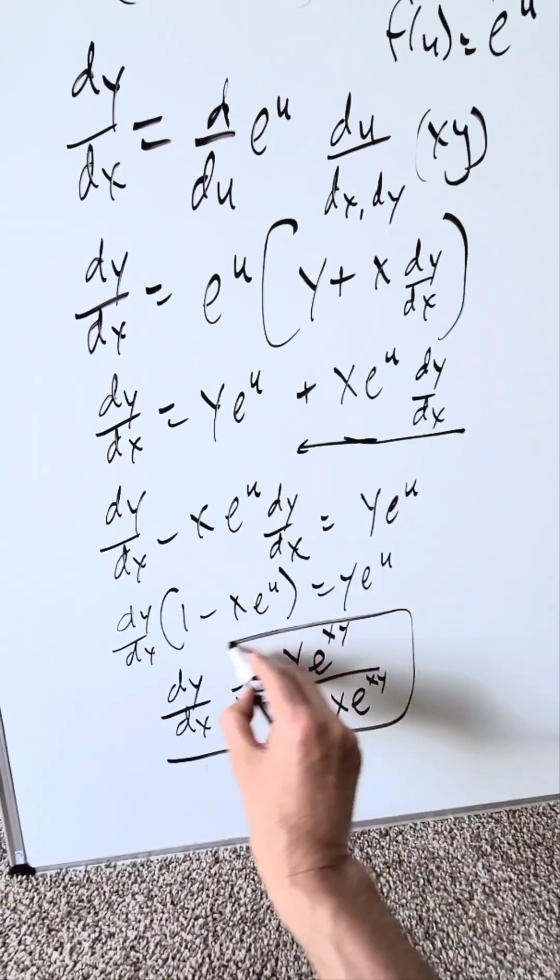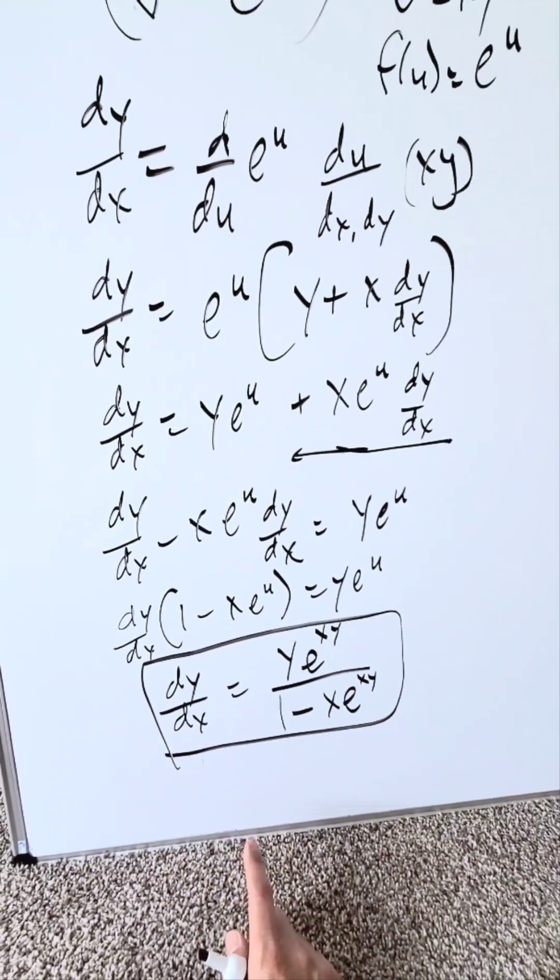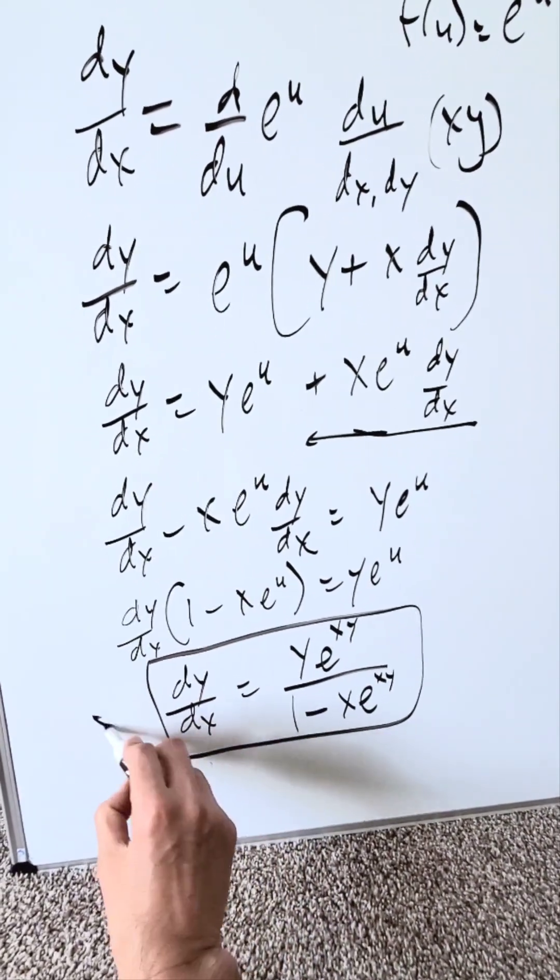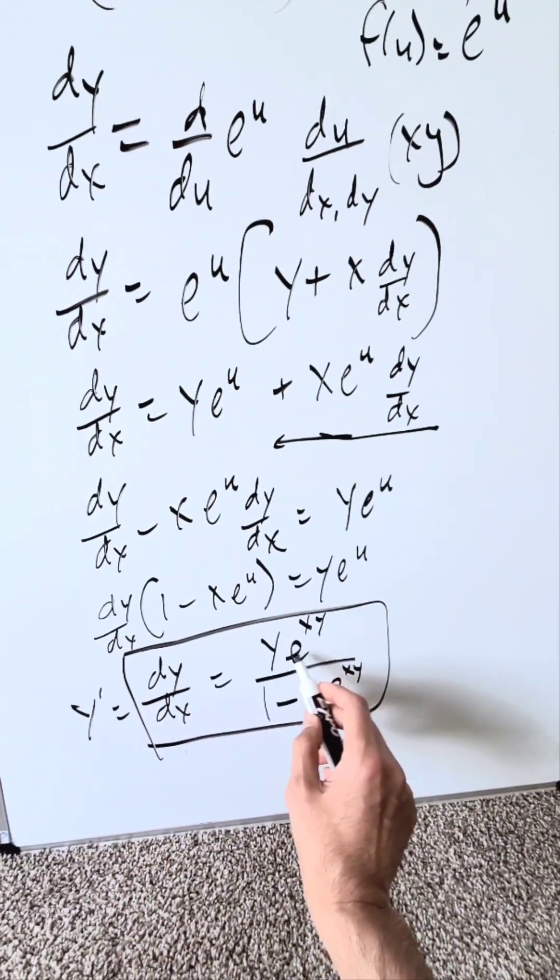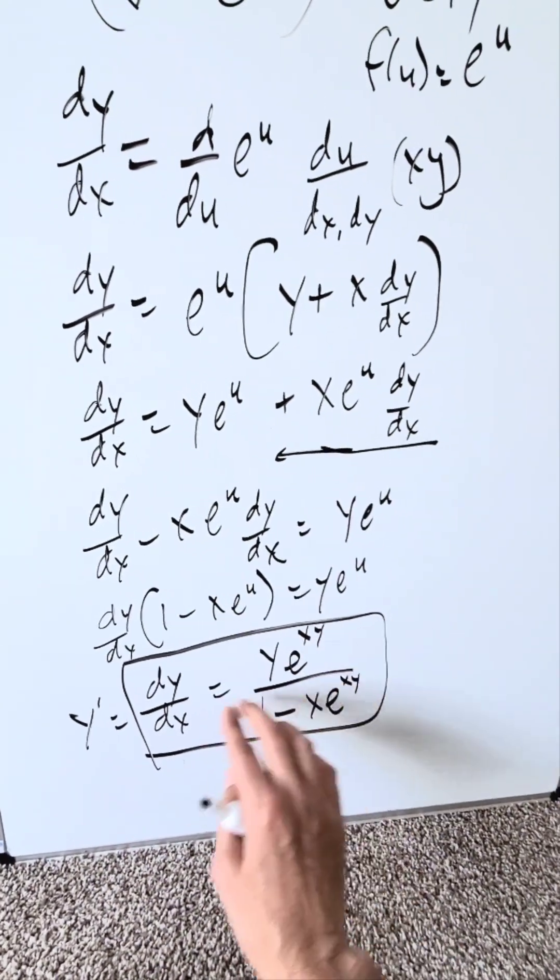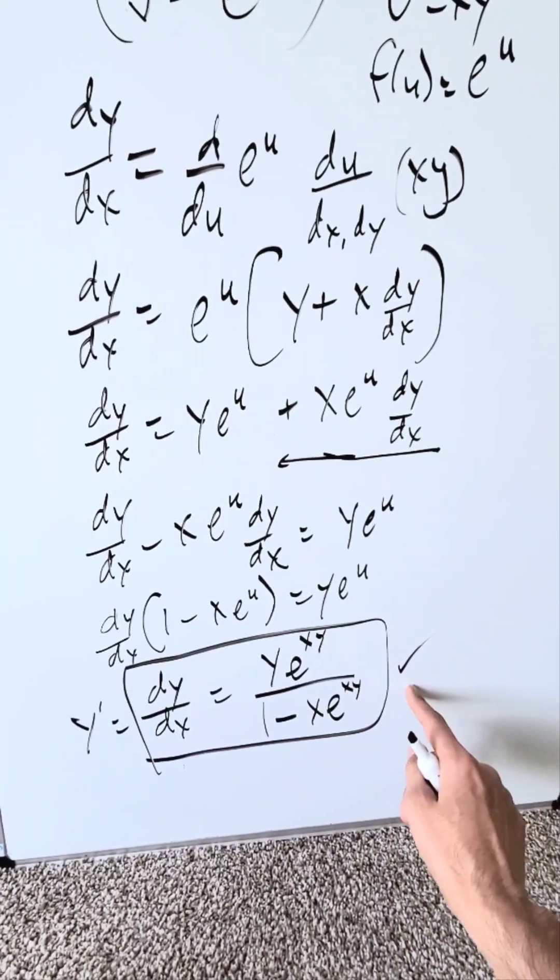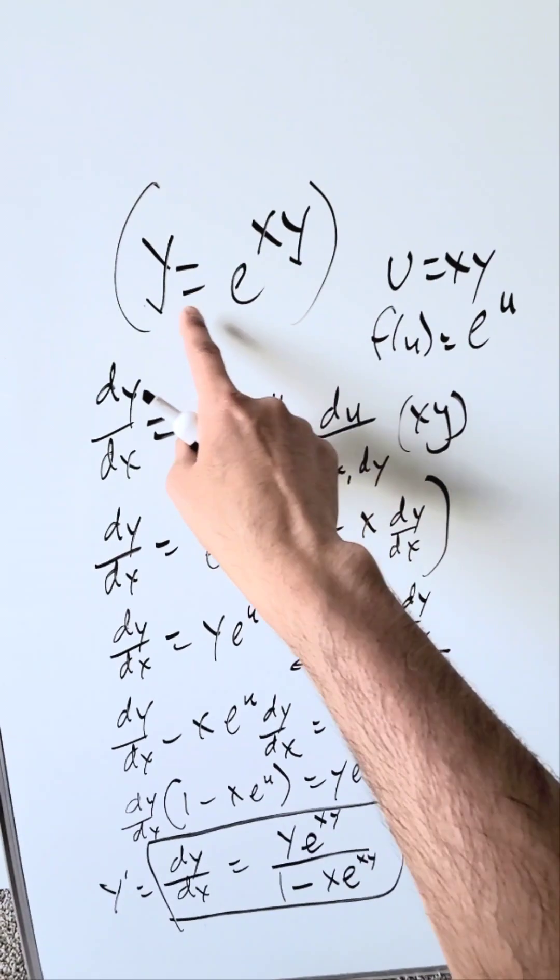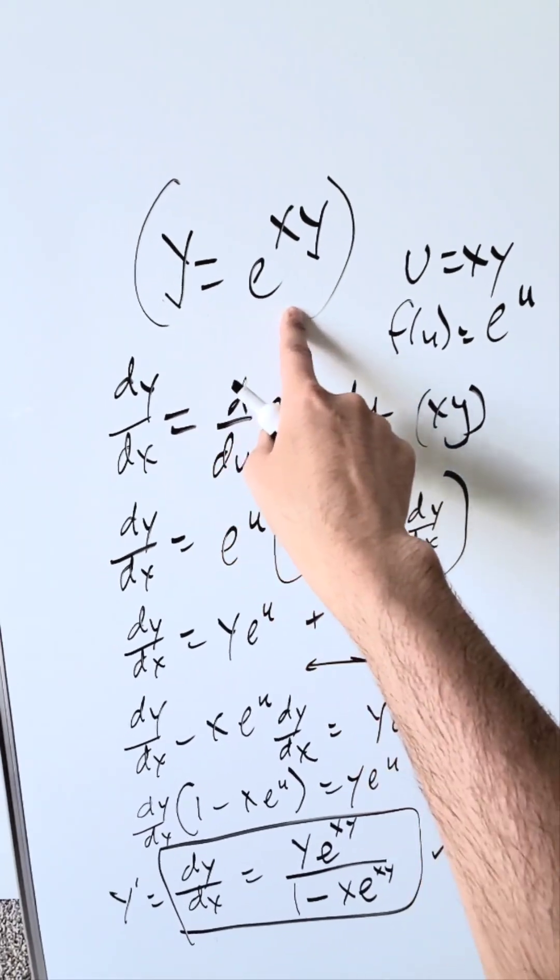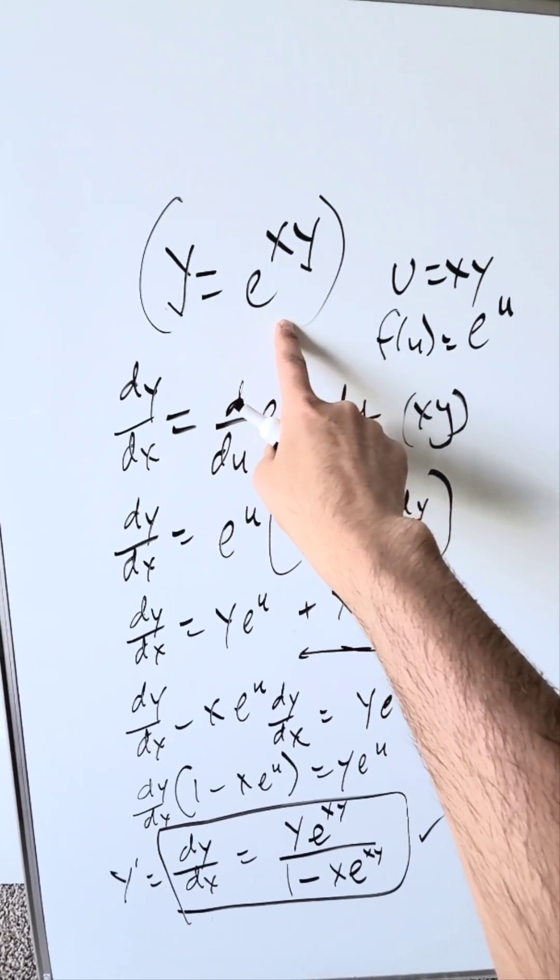This right here is our end result of implicit differentiation. It will be correct: dy/dx or you can say y prime equals y times e to the power of xy divided by 1 minus x times e to the power of xy. It should be a correct derivative of what you see right over here, y equals e to the power of xy.